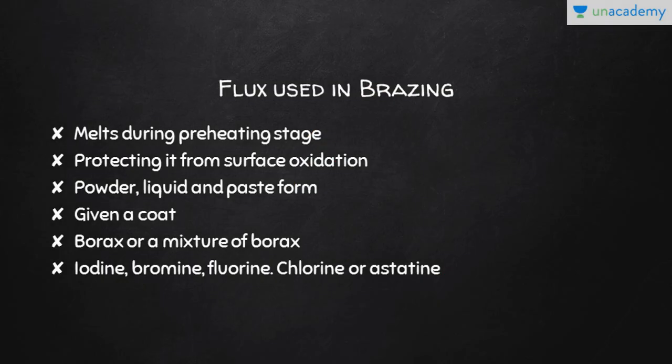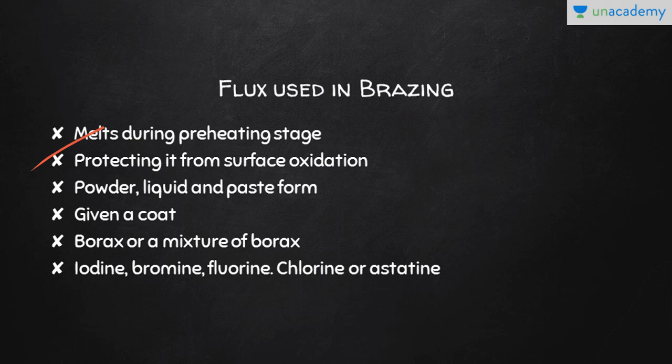Let's move on to the flux used in brazing. The flux performs its usual function: it melts during the preheating stage and spreads over the joint area, wetting it and protecting the surface from oxidation. It also cleans the surface by dissolving metal oxides. The flux used in brazing is available in powder, liquid, and paste form. One method of applying flux in powder form is to dip the heated end of the filler rod into a container of powder flux, which allows the flux to stick to the filler rod.